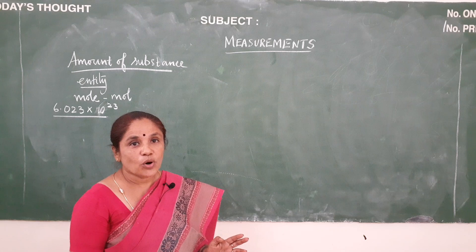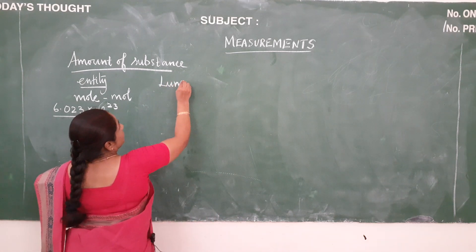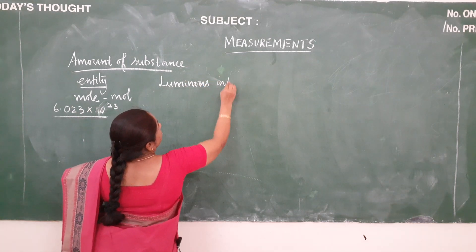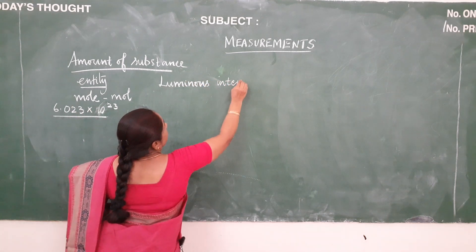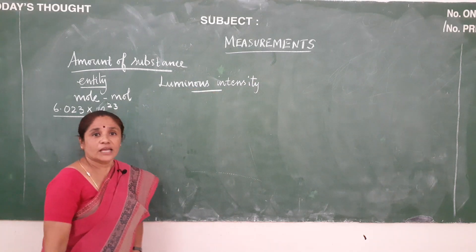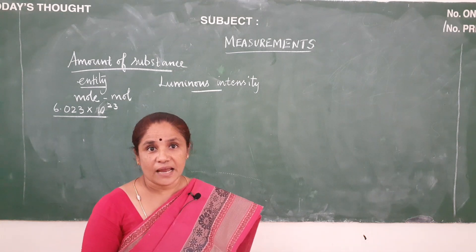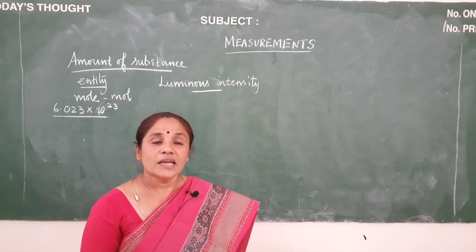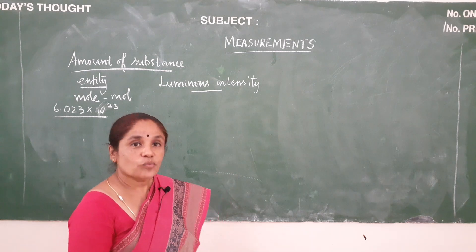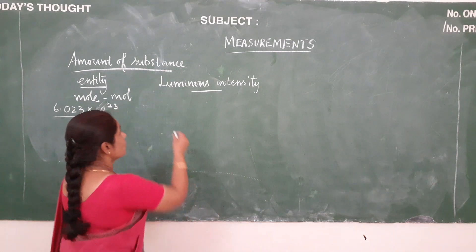Next we will move on to the next topic: luminous intensity. Have you seen a cricket match? While watching the cricket match, you would have seen the umpire holding a device in his hand and checking the intensity of the light. The instrument which is used to check the intensity of the light is called a photometer.